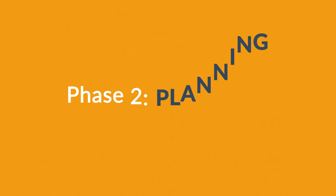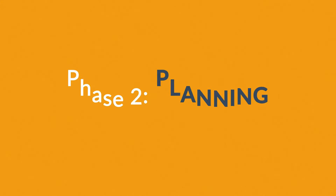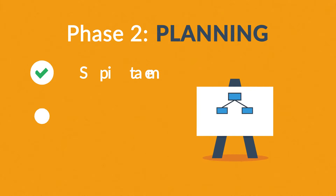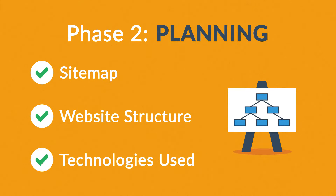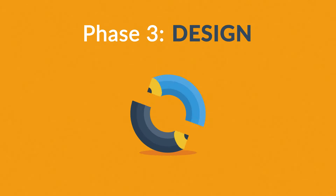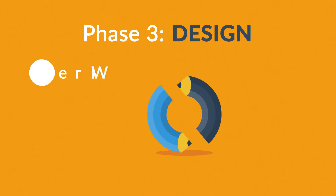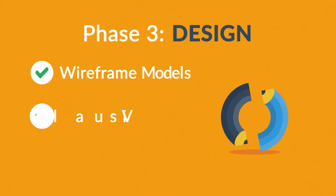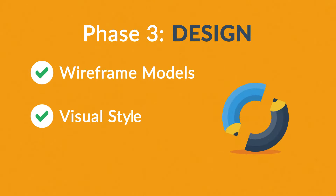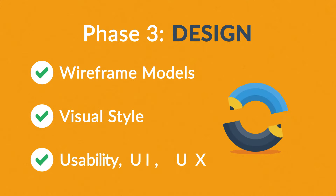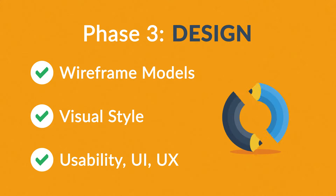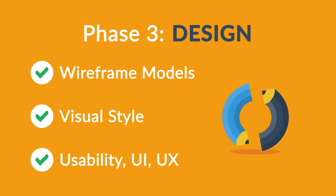Phase 2: Planning. A plan includes a definition of the sitemap, structure, and technologies that we're going to use. Phase 3: Design. Not only do we focus on wireframe models and the visual style in this stage, but also on the usability of the user interface for the best possible user experience.